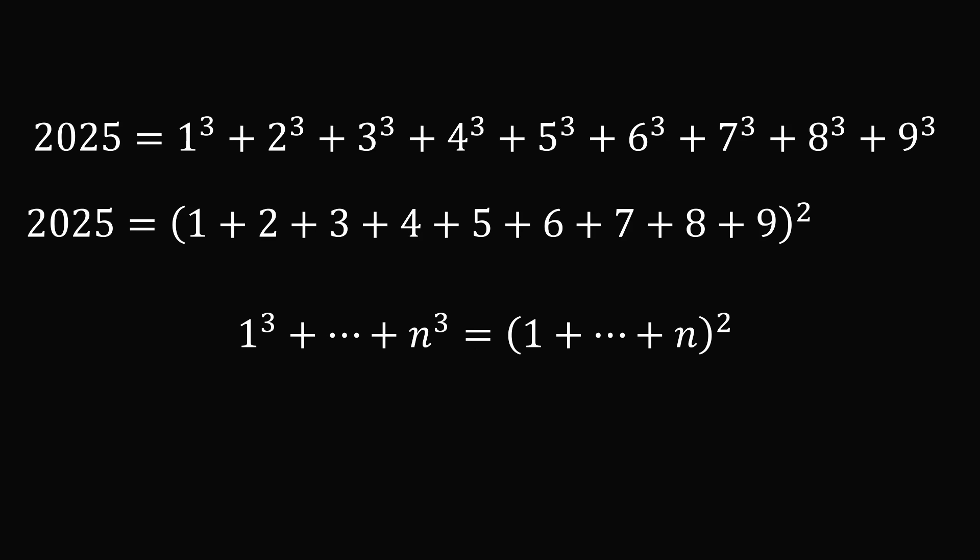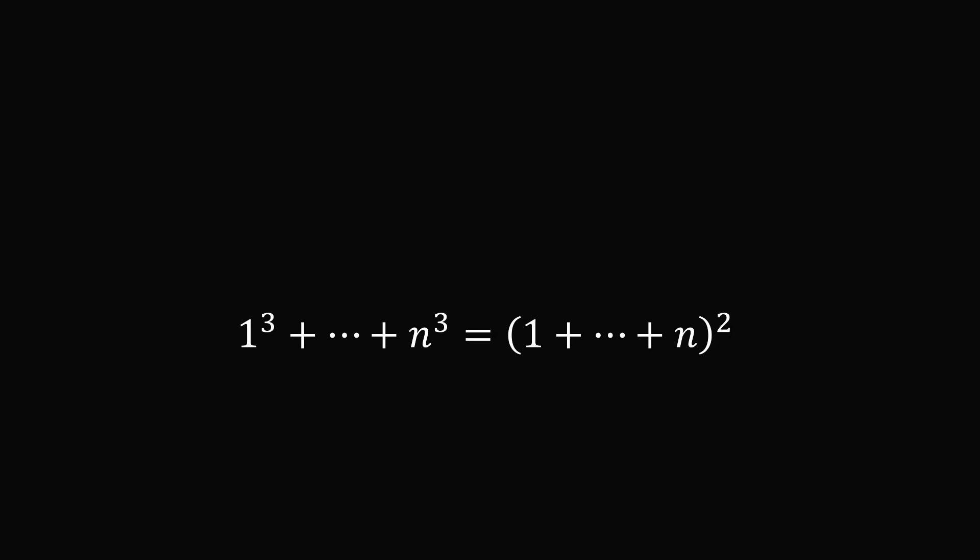It turns out this is not just some sort of coincidence we have for 2025. This is in fact a general formula. The sum of the first n cubes is equal to the square of the sum of the first n numbers.